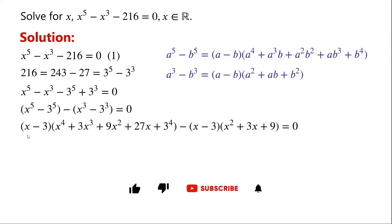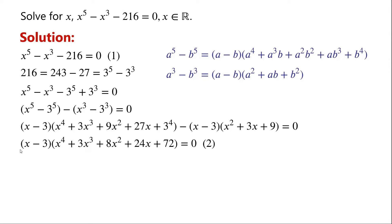By applying these identities, we can write x minus 3 times x to the power of 4 plus 3x cubed plus 9x squared plus 27x plus 3 to the power of 4, minus x minus 3 times x squared plus 3x plus 9. The two terms have a common factor of x minus 3, so we can now write x minus 3 times x to the power of 4 plus 3x cubed plus 8x squared plus 24x plus 72 equals 0. So either x minus 3 equals zero, or this quartic algebraic expression equals zero.